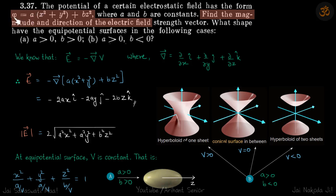If you put potential is constant, we can rewrite the equation in this form. Now in the first case, if a and b both are greater than zero, in that case this is the equation of an ellipsoid.